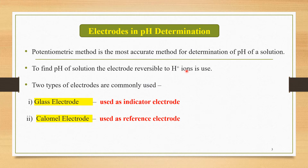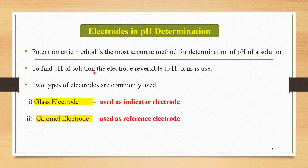First, we are going to study the electrodes in pH determination. In the last lecture, we discussed about what is meant by pH and how to determine this pH with the help of a pH meter. The potentiometric method is the most accurate method for determination of pH of a solution. To find pH of a solution, the electrode reversible to H+ ions is used.